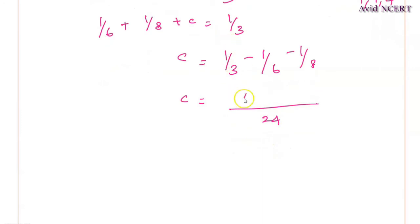3, 8 times is 24, 8 into 1 is 8. Minus 6, 4 times is 24, 4 into 1 is 4. Minus 8, 3 times is 24, 3 into 1 is 3. So minus 4 minus 3 is minus 7. So 8 minus 7 is 1/24. So which is C's 1 day work will be equals to 1/24.